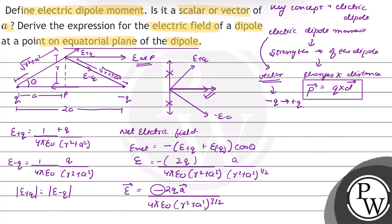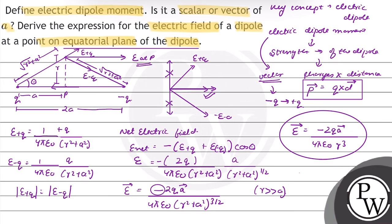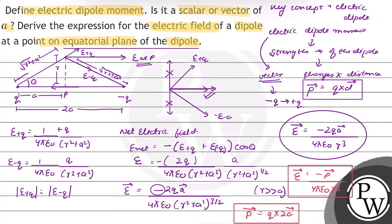The minus sign denotes the direction. For large distances, r squared plus a squared approaches r cubed, so the electric field simplifies to minus 2Qa vector upon 4 pi epsilon-not times r cubed. This can be written as E vector equal to minus P vector upon 4 pi epsilon-not times r cubed, since P vector equals Q into 2a vector.